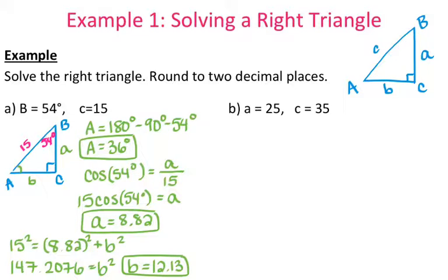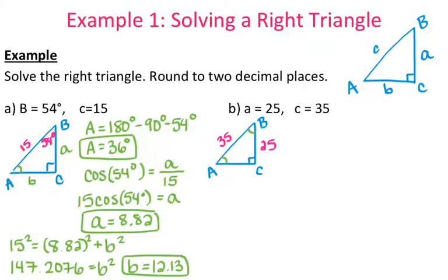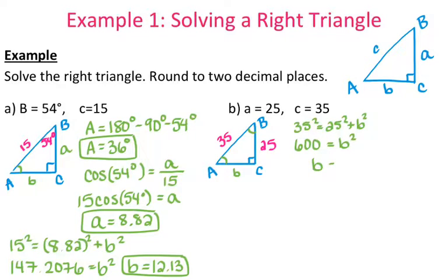Now I have all three sides and all three angles. For part B, I'm going to do the same thing — set up my triangle with angles A, B, C, where C is always the right angle. I know side a is 25 and side c is 35. What I'm missing is angle A, angle B, and side b. I'll solve for side b first using the Pythagorean theorem: 35² = 25² + b², so 35² minus 25² = 600 = b², so b = √600 = 24.49.